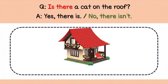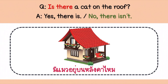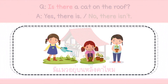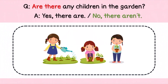แต่เราเขียนให้อยู่ในรูปย่อค่ะ ประโยคนี้แปลว่ามีแมวอยู่บนหลังคาไหม ต่อมา Are there any children in the garden? มีเด็กๆ อยู่ในสวนไหม? ถ้ามีเราก็ตอบว่า Yes, there are ถ้าไม่มีเราสามารถตอบได้ว่า No, there aren't ค่ะ